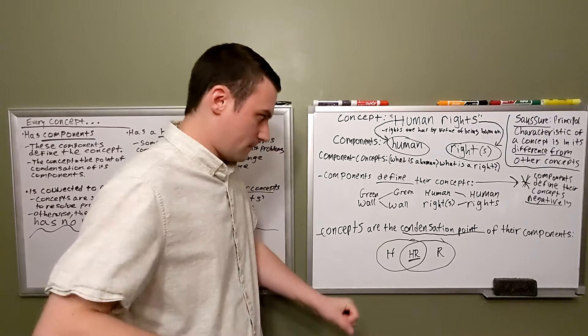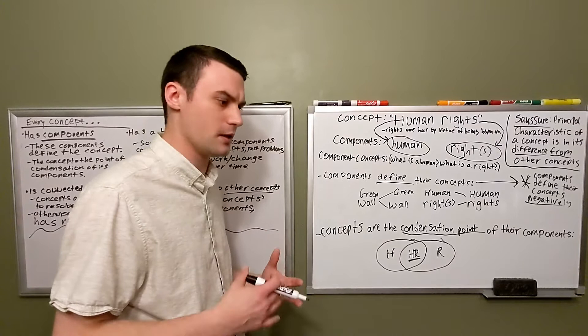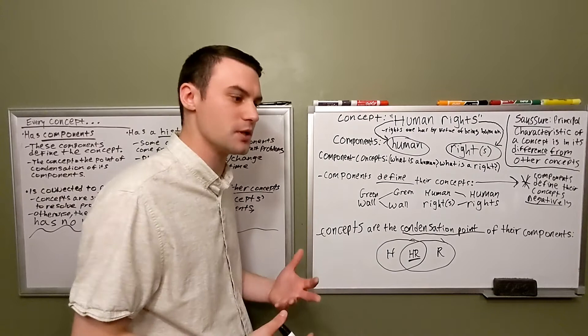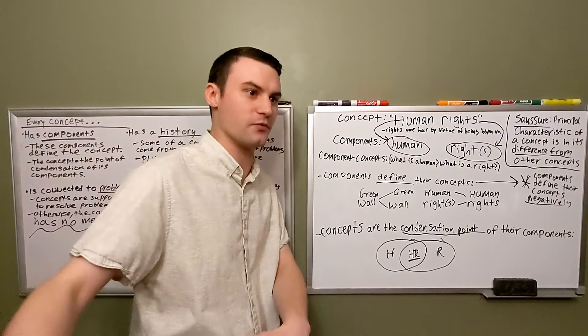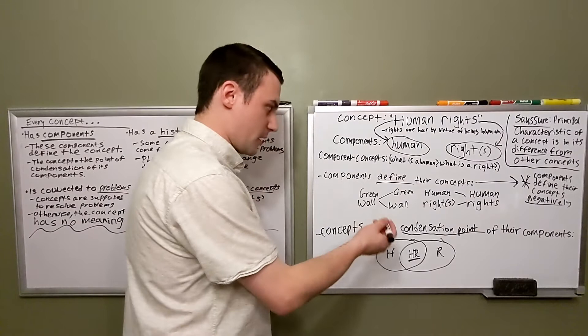So when we say that components define their concepts, let's return to our example of the green wall and our new example of human rights. What concepts components do is essentially they form the boundaries of a concept. And I think we talked about this in the introduction that for Deleuze, it's very important that a concept has some kind of boundaries. Otherwise, it's just meaningless. In other words, when we say that a concept has boundaries, I mean, it's easy to tell that this is one thing and some other concept is different from this. If you can't tell what the difference between one concept is and another, then you need to work on your conceptualization because it's not very clear.